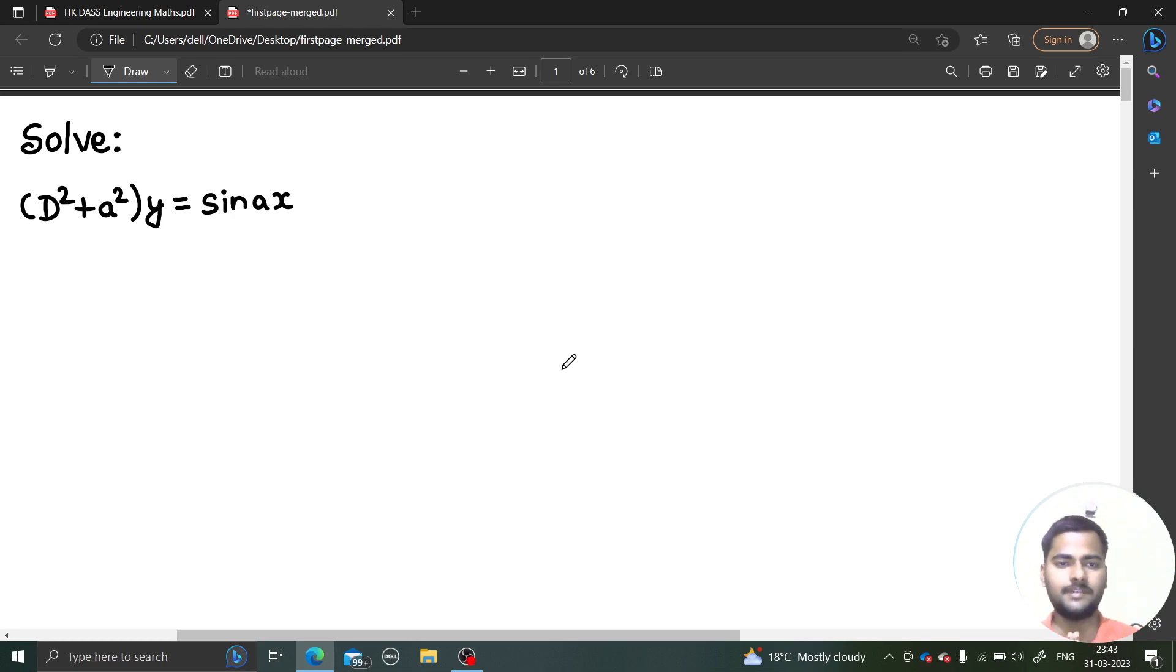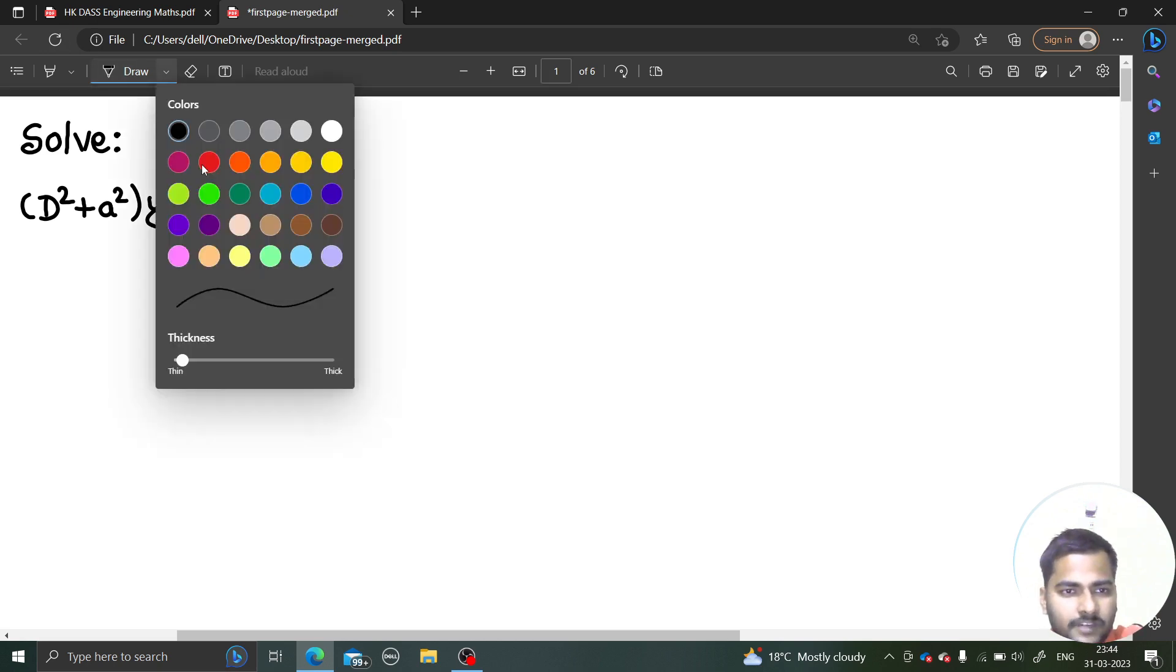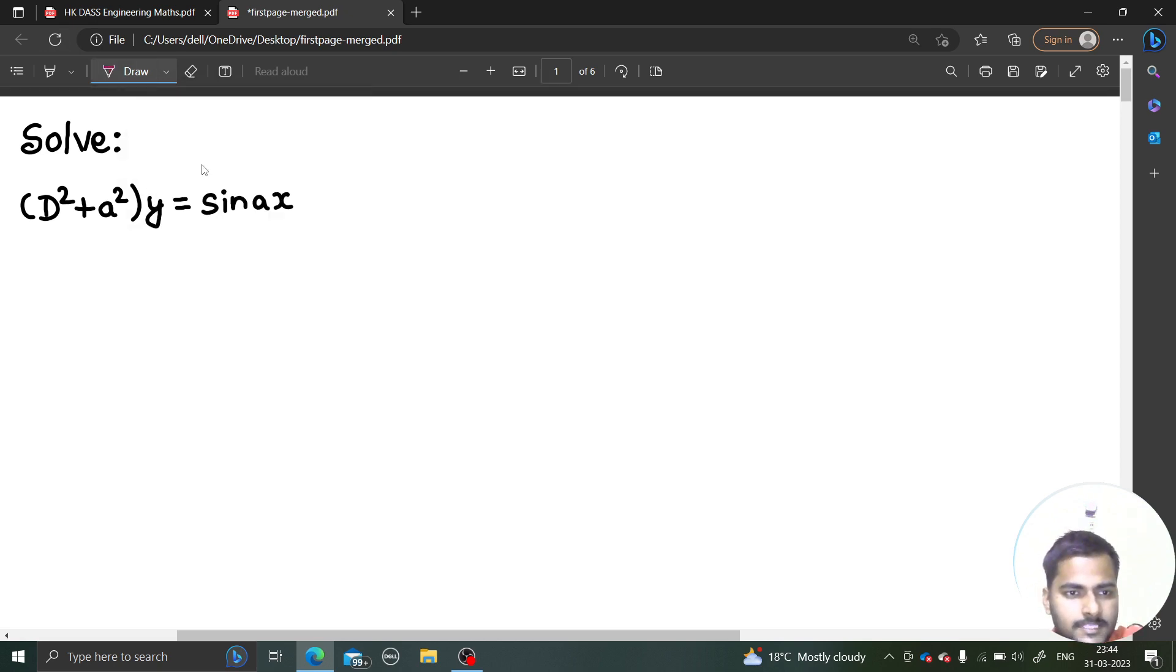Hello everyone, Namaskar, Raj Krishna, Visai. Let us solve one more problem from linear differential equation with constant coefficient. We have a simple basic problem in front of us: D square plus a square operating on y equals to sine ax.